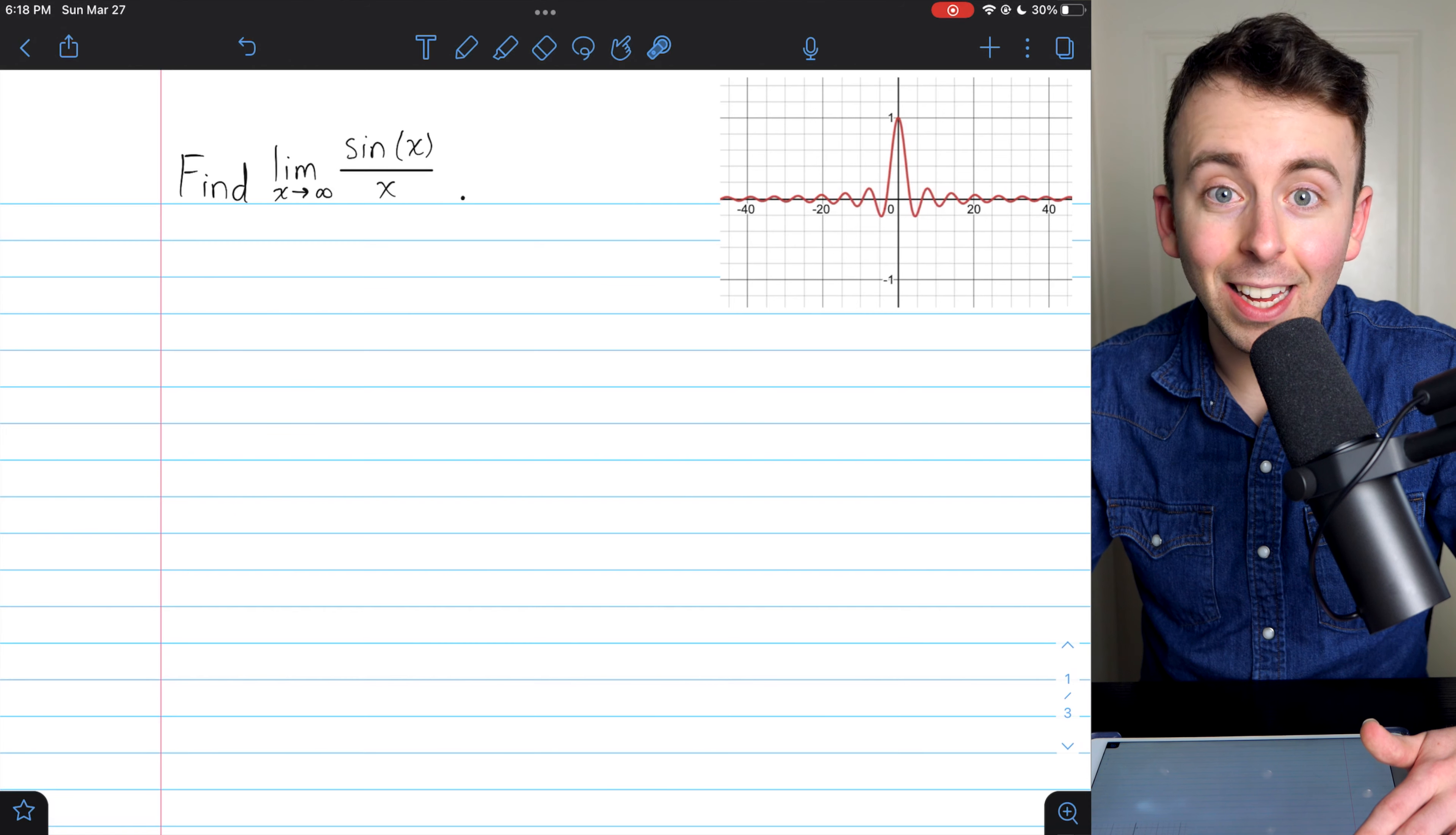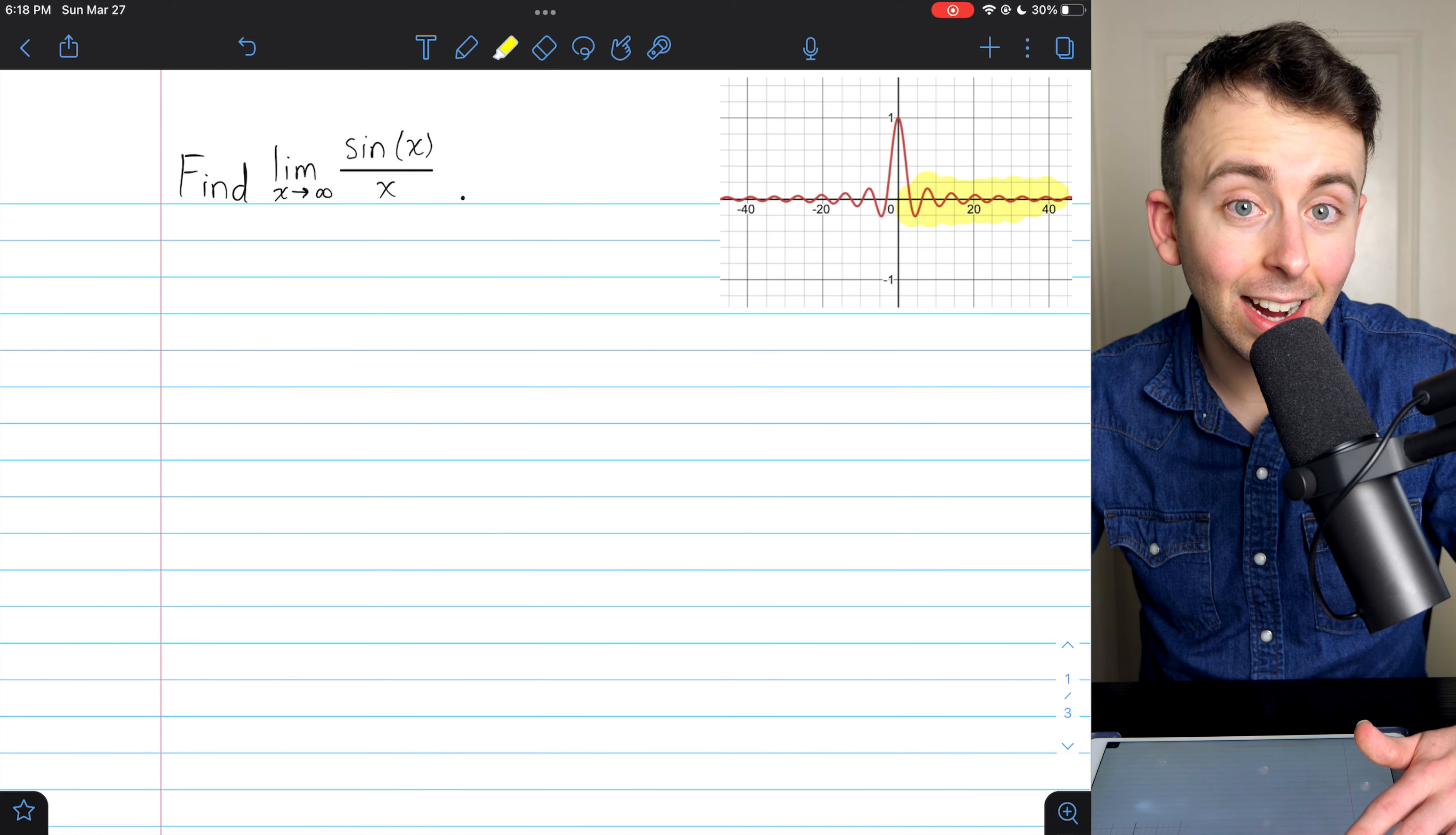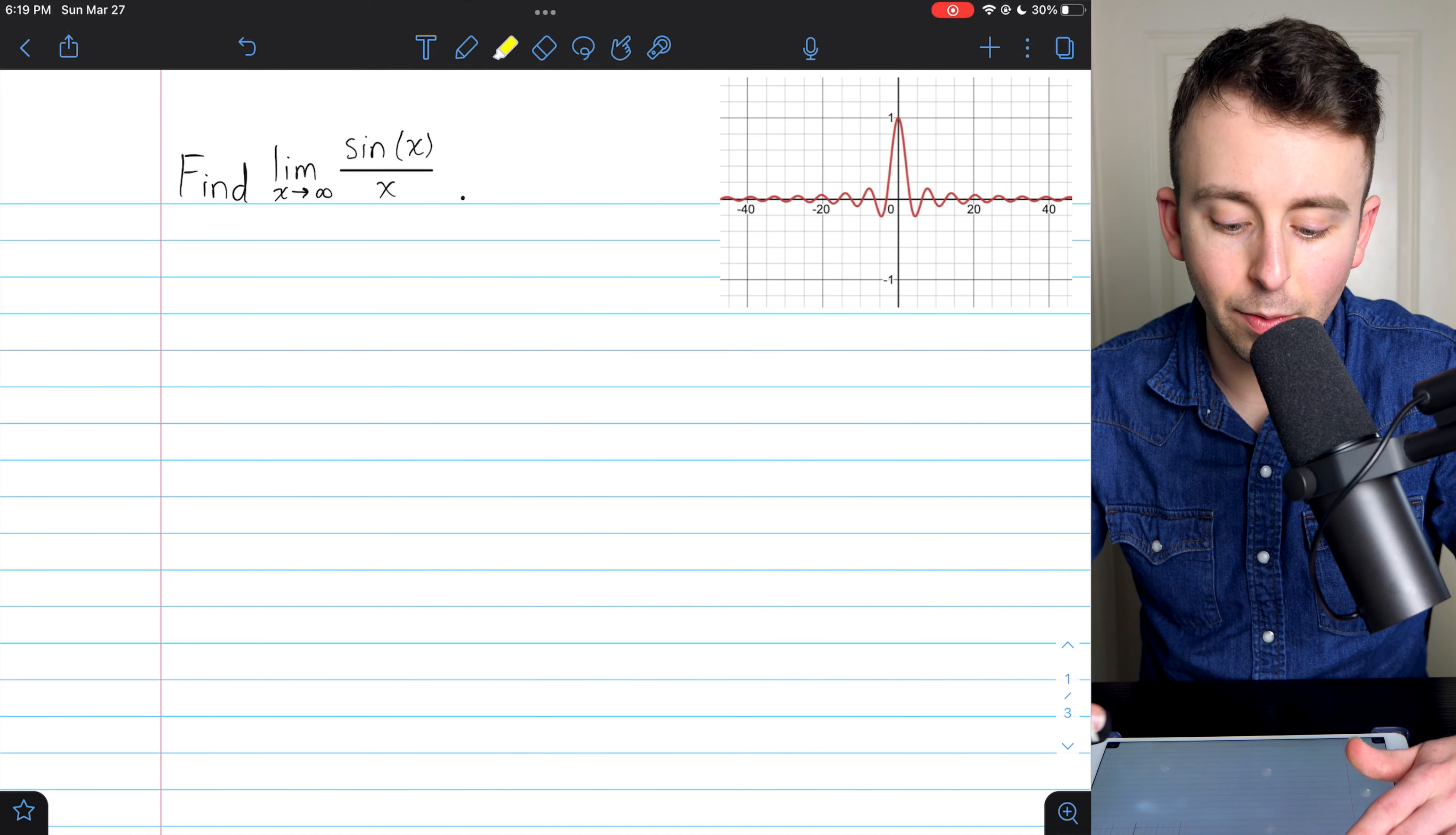Now, what do you think this limit is? Well, sine of x just goes between 1 and negative 1, and it's being divided by x, which is getting really big, so you probably imagine the limit is 0, which is correct. And that's what the graph suggests as well. As x gets really, really big, sine of x over x goes to 0. And if x were going to negative infinity, again, the limit would be 0, and the proof of that is almost exactly the same as what we're going through today, so I'll leave that as an exercise for you to try if you're interested.